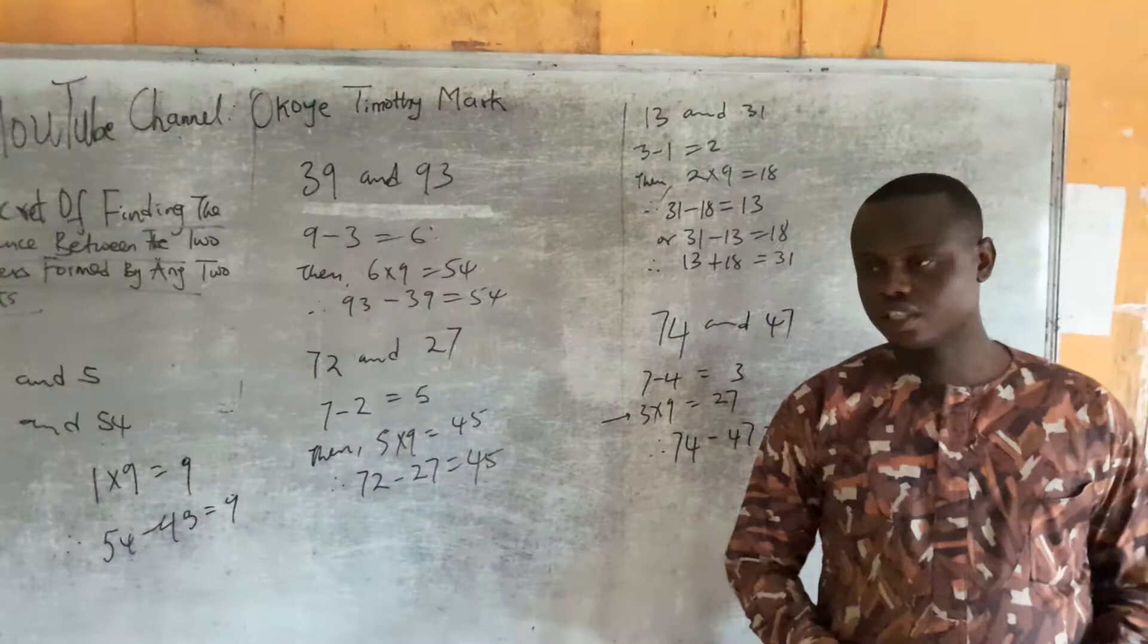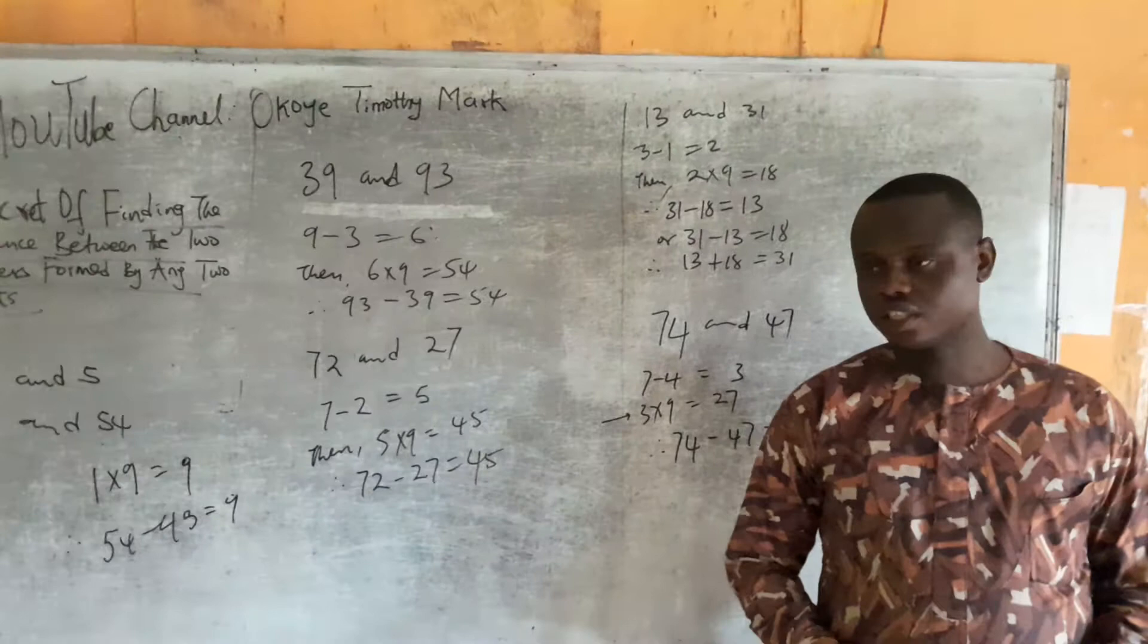And so on and so forth, any numbers you can think of. This is the easiest way of getting the difference between any set of numbers whose digits are just two. Thank you, see you in my next video, take care.